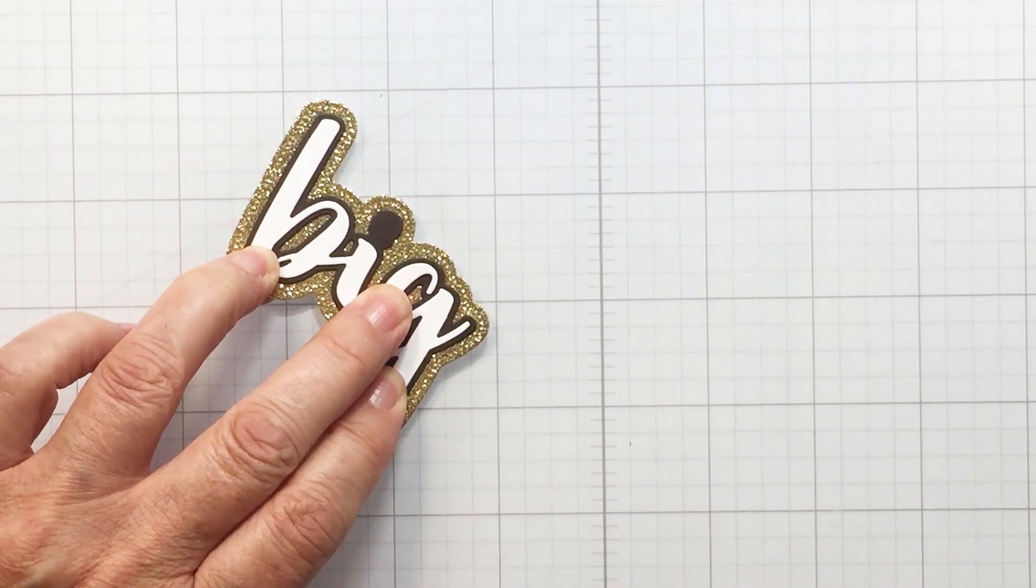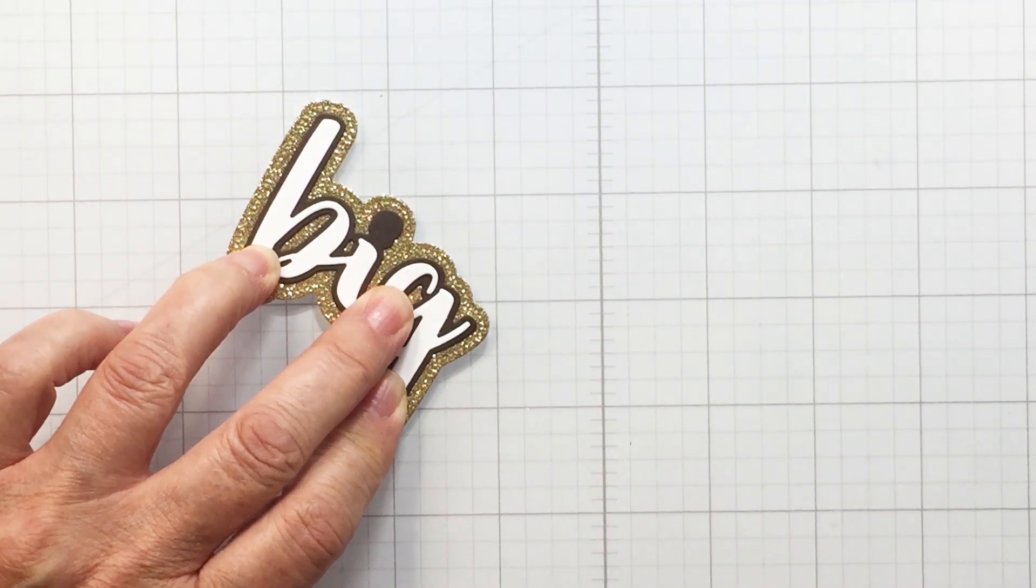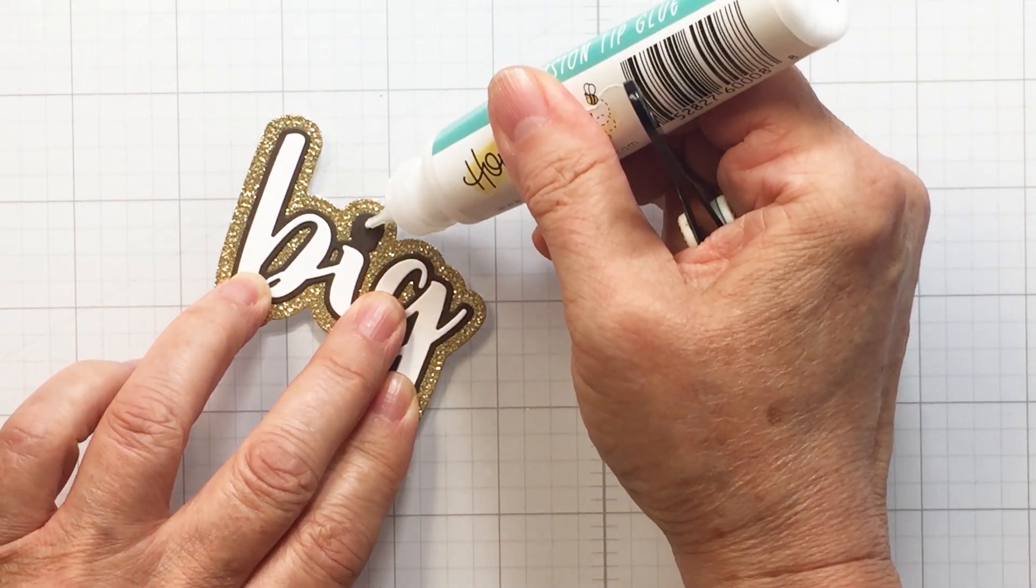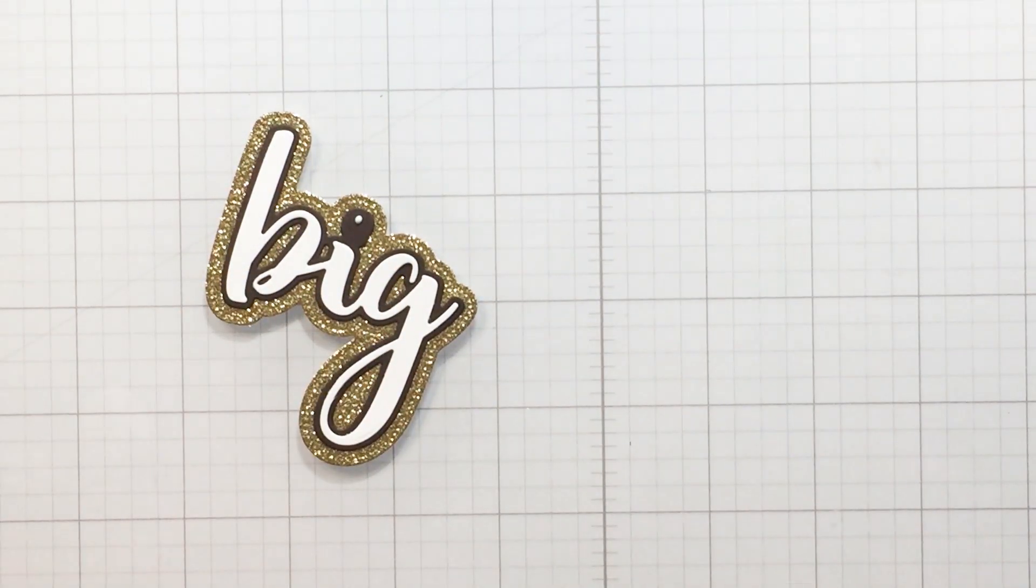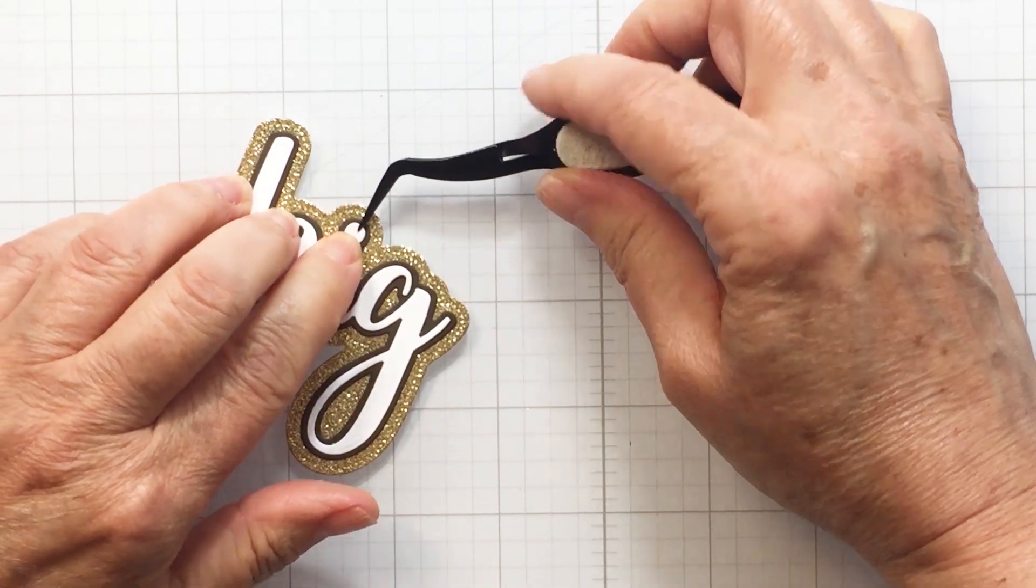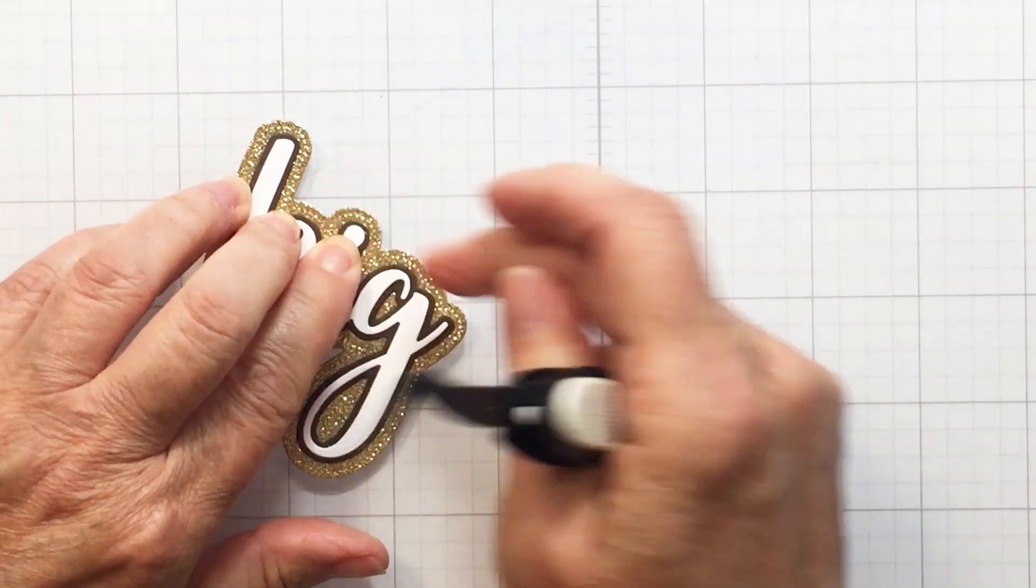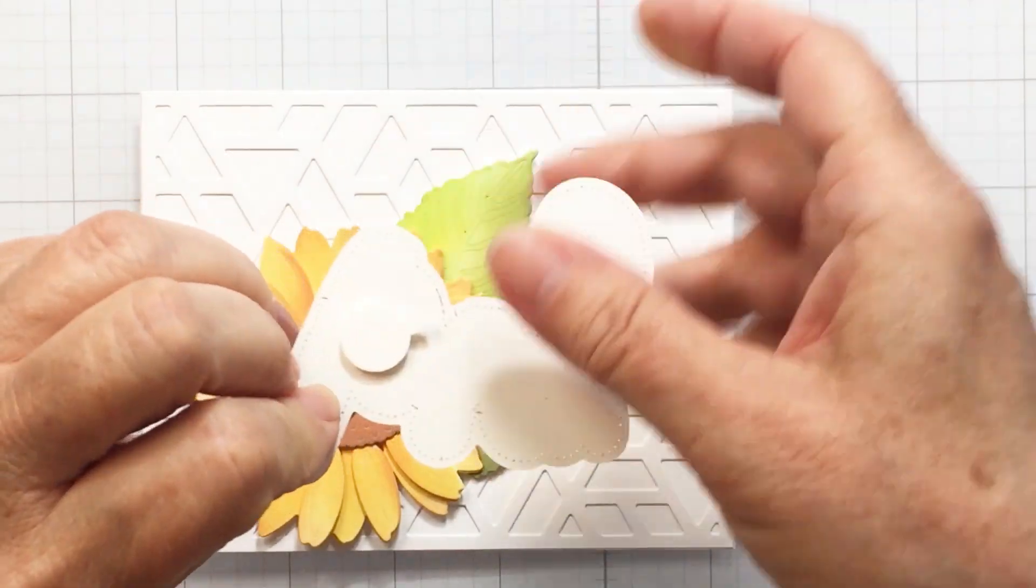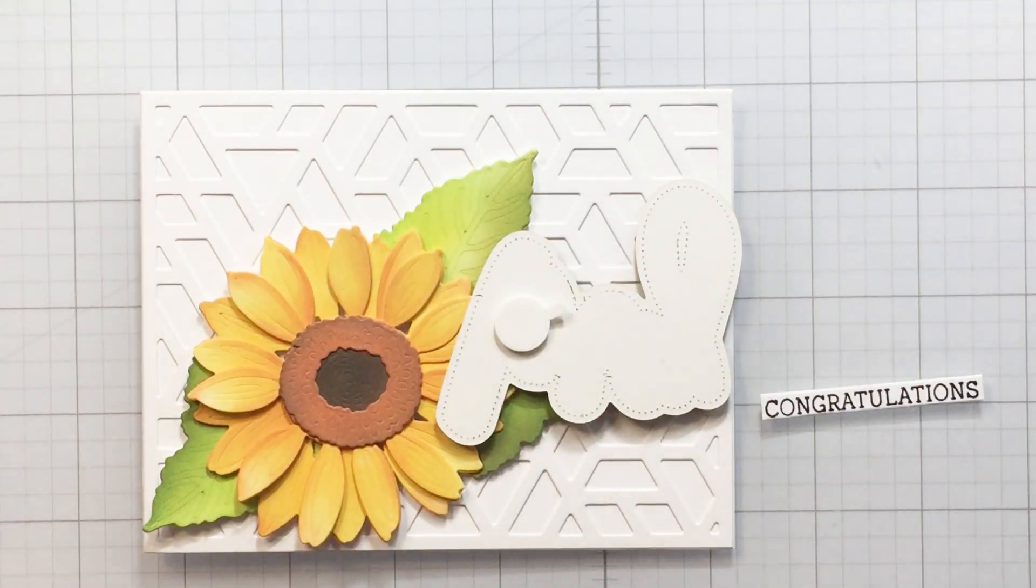I love the impact of the buzzwords. I think they are just always so stunning on a card and they just really do add that impact to the project. So I'm just going to use my Honey Bee tweezers to help me put that together and I'm going to pop up the sentiment on some foam adhesive.